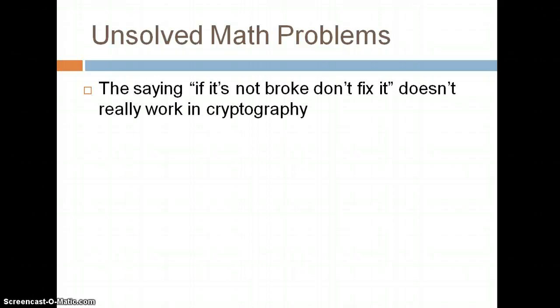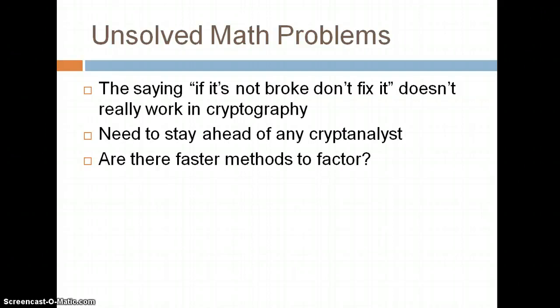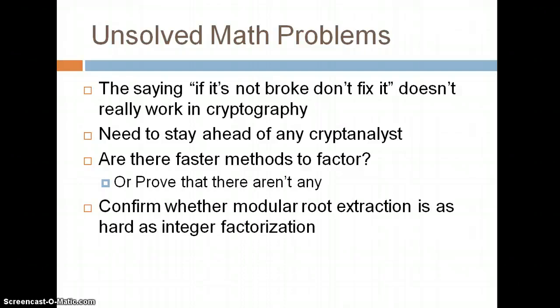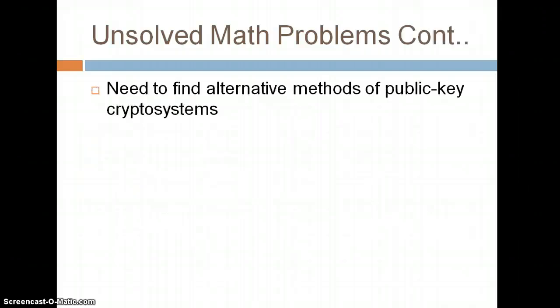In cryptography, the saying 'if it's not broke, don't fix it' doesn't really apply because you want to stay ahead of the cryptanalyst. People are trying to find ways to break the RSA scheme. Are there faster methods to factor? If they are, I would want to find them first before somebody else finds them, or prove that there aren't any. Confirm whether modular root extraction is as hard as integer factorization. Find alternative methods of public key cryptosystems. Right now it's just the RSA scheme. What other hard problems are there in math that could be used to create new cryptosystems?